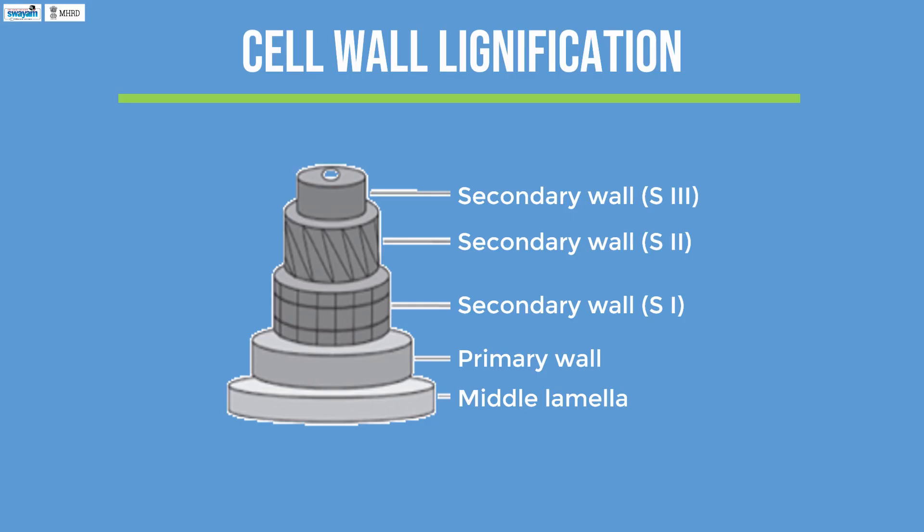The secondary cell wall layer of plants usually consists of three sub-layers. The percentage of lignin in the primary wall and in the S1 layer of the secondary wall is much higher compared to the S2 and S3 layers.